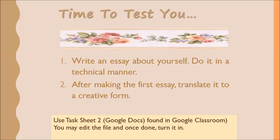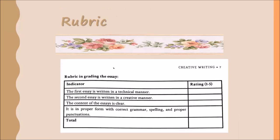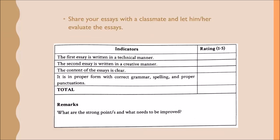After that, write an essay about yourself. Do it in a technical manner. After making the first essay, translate it to a creative form. Use task sheet 2 in Google Docs found in Google Classroom. You may edit the file and once done, turn it in. You can use this rubric as your reference for grading the essay. After that, share your essays with a classmate and let him or her evaluate the essays using the following rubric. You also have to add a remark after rating the output.